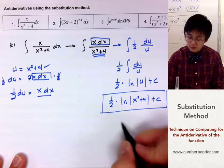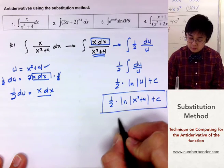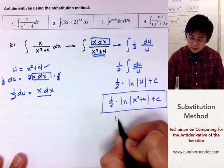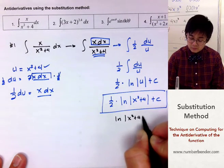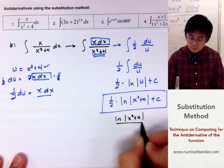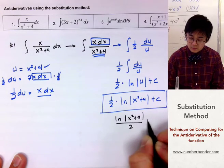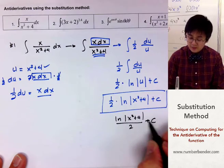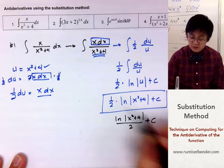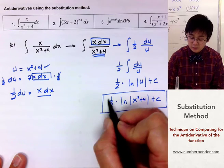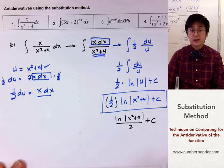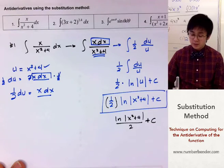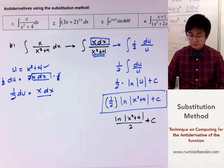This is the antiderivative of problem number one. Some versions of the problem may write this differently, but it's the same — we're simply multiplying one half into ln(x squared plus 4). That's problem number one.